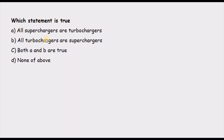Question 9 — which statement is true: all superchargers are turbochargers, all turbochargers are superchargers, both A and B, or none of the above. 'All superchargers are turbochargers' is false — turbochargers use exhaust energy to drive the compressor, while superchargers use engine power. 'All turbochargers are superchargers' is correct — a turbocharger uses a compressor run by some energy source, which by definition makes it a supercharger. Correct answer: B — all turbochargers are superchargers.